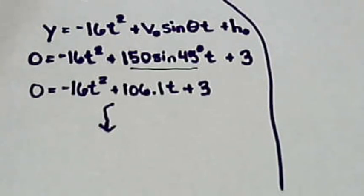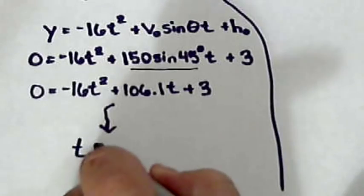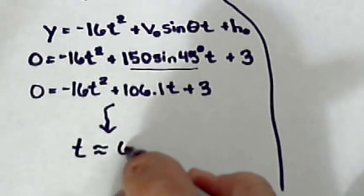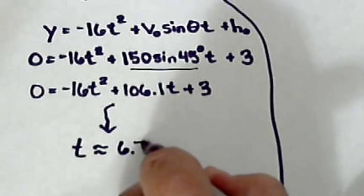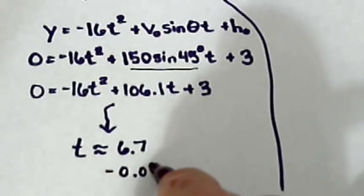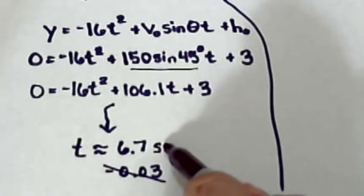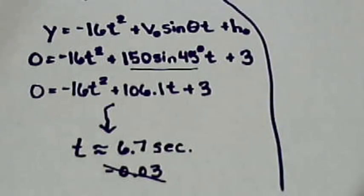So we're just going to put the A negative 16, the B 106.1, and the 3 for the C into our spreadsheet and we get two times, one is about 6.7 seconds, the other is about negative 0.03 seconds, and since we're dealing with time the negative doesn't matter. So what we know now is in this situation the ball will be in the air for 6.7 seconds.